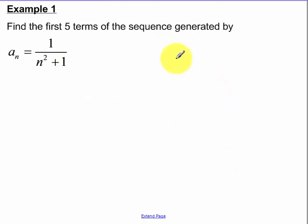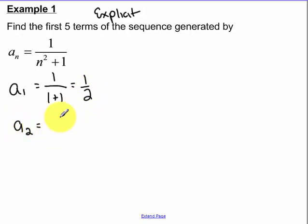Okay, the first five terms of the sequence given by this formula. This is an explicit. So our first term, notice how N is 1, is 1 over 1 squared plus 1, which is 1 half. Our second term, 1 over 2 squared plus 1. So 2 squared is 4, plus 1 is 5, so 1 fifth.